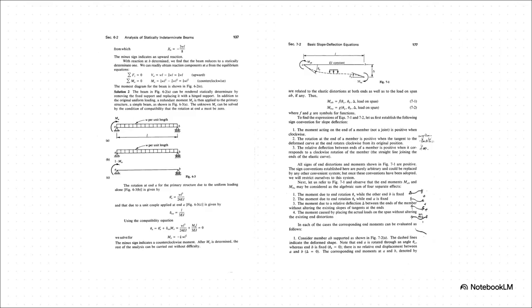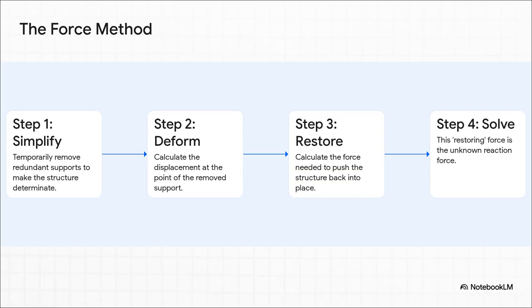The force method, as the name suggests, focuses on finding unknown forces. The displacement method, on the other hand, focuses on finding unknown movements. Okay, so the force method, it's kind of like a brilliant thought experiment. Here's what you do. First, you just pretend that extra support isn't there. You mentally remove it. All of a sudden, your impossible puzzle becomes a simple, solvable one again. Great. Now, you calculate how much the beam bends or sags down where that support used to be. Then, for the final step, you figure out exactly how much force you'd need to push that sag right back up to where it started. And guess what? That force is the exact unknown force from that support you were trying to find all along. It's so clever.